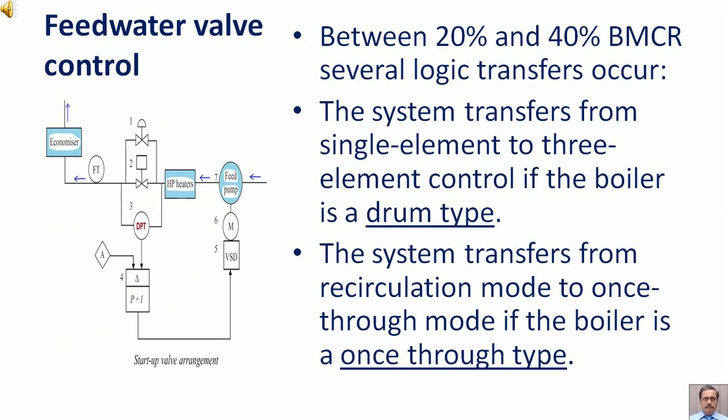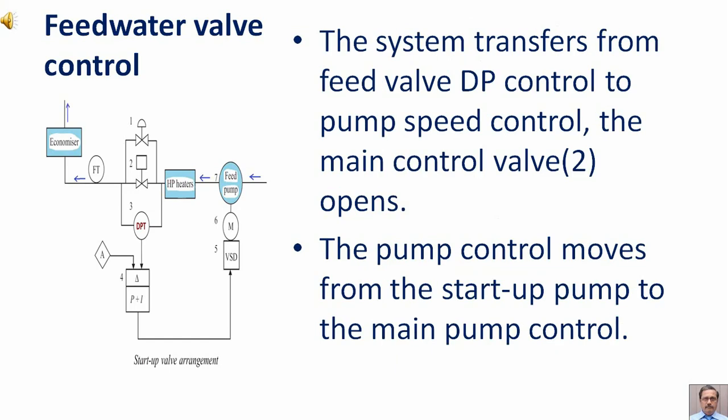Between 20% and 40% BMCR several logic transfers occur. The system transfers from single element to three element control if the boiler is a drum type. The system transfers from recirculation mode to once through mode if the boiler is a once through type. The system transfers from feed valve DP control to pump speed control. The main control valve number two opens. The pump control moves from startup pump to the main pump control.